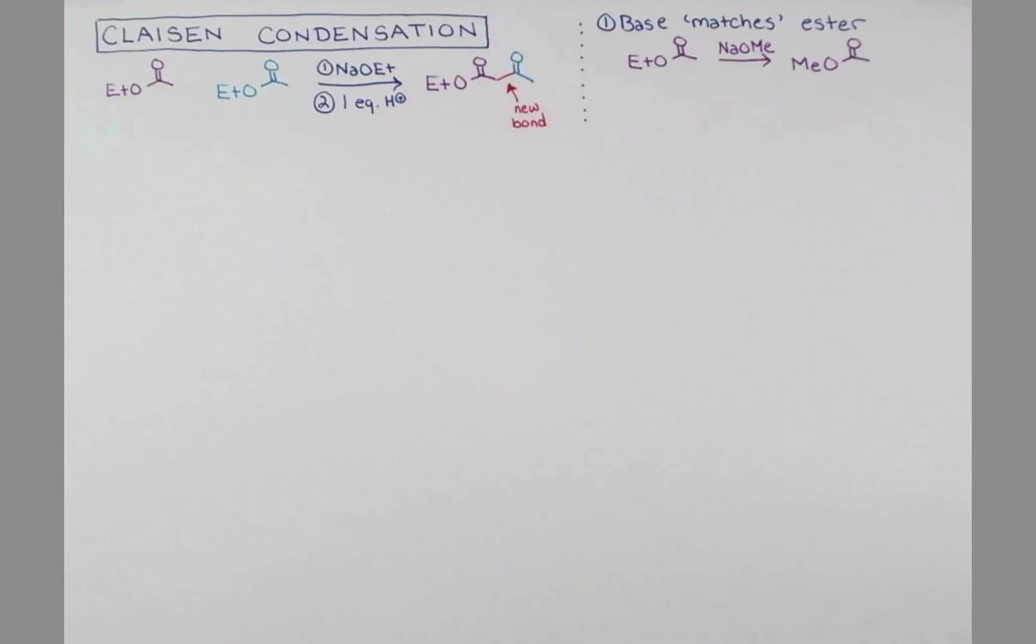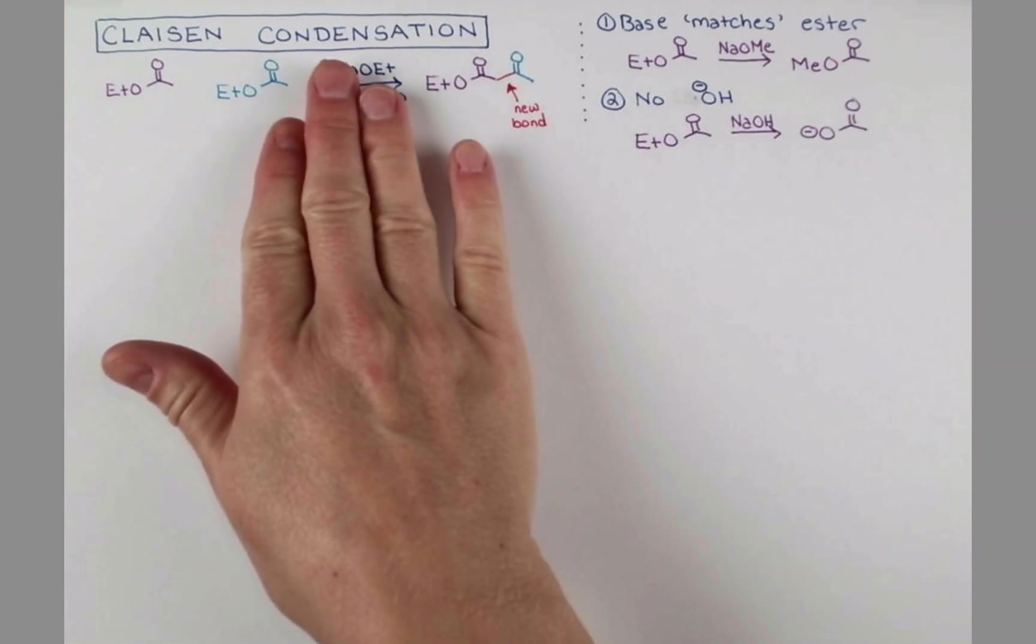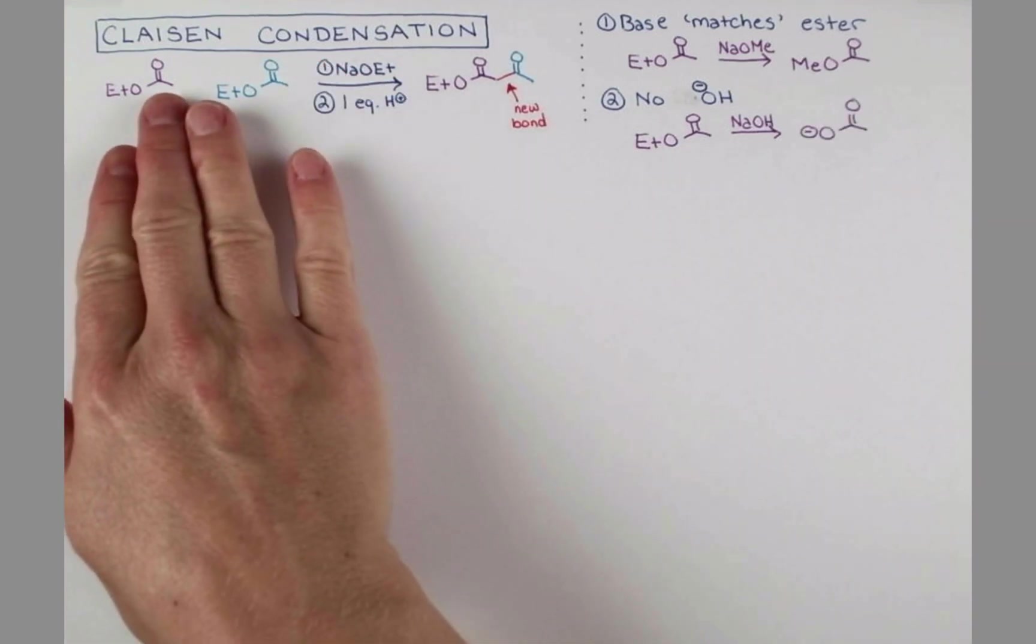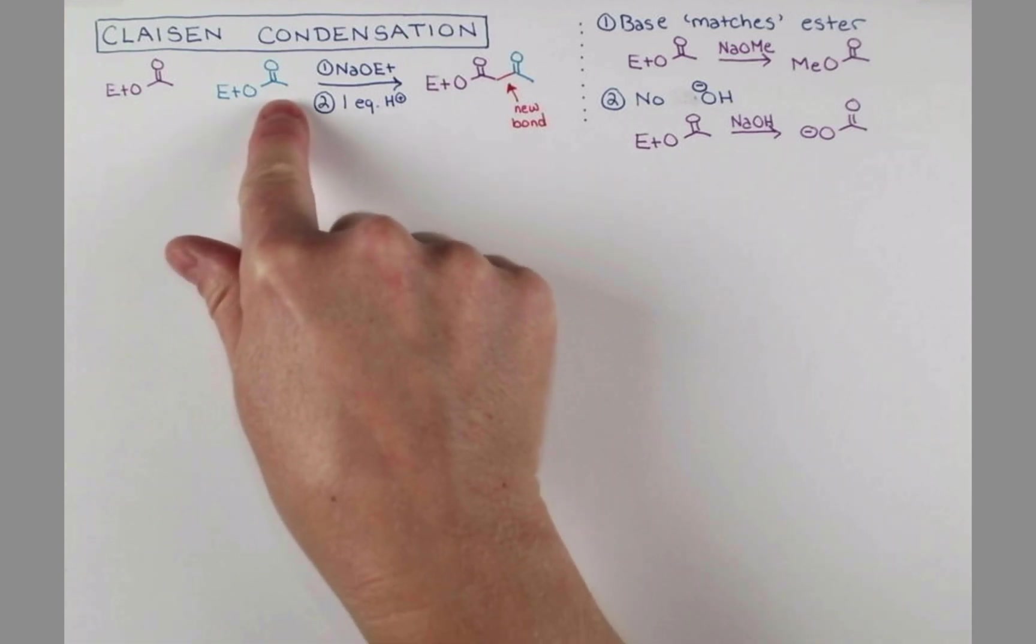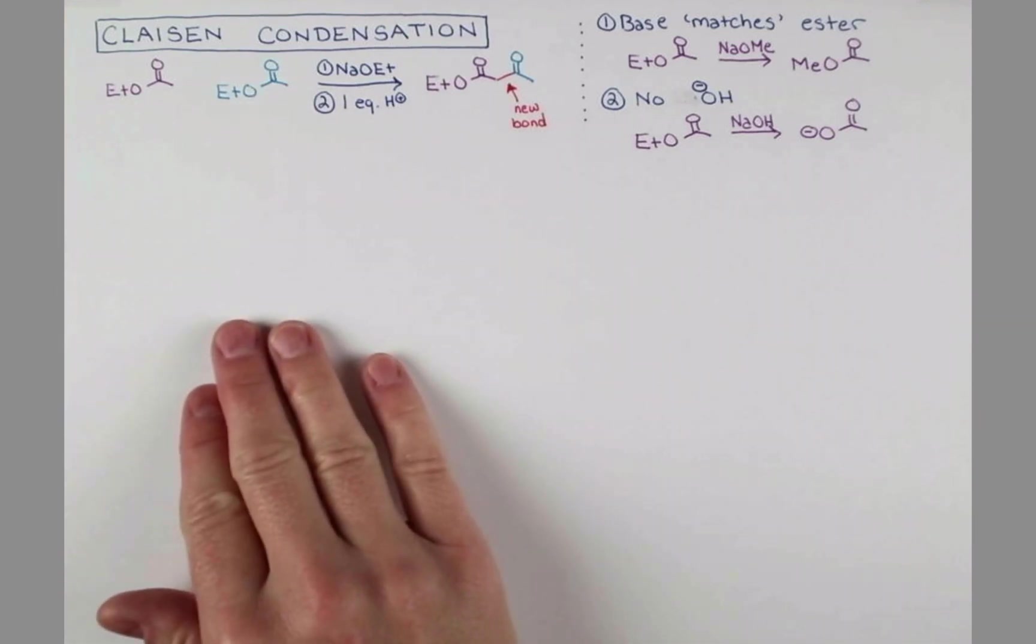Another consideration is that the base cannot be hydroxide. If we consider using this ethyl ester as a starting material again, and we treat this with something like sodium hydroxide or potassium hydroxide, we will actually get cleavage to the carboxylate. Now the Claisen condensation occurs by forming enolates. We're going to form an enolate here, attack, and I'll show you that mechanism in just one second.